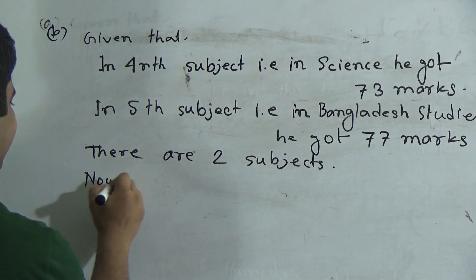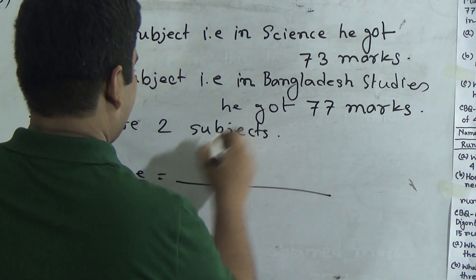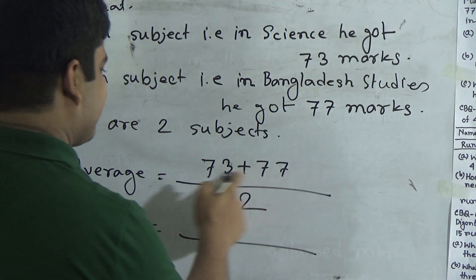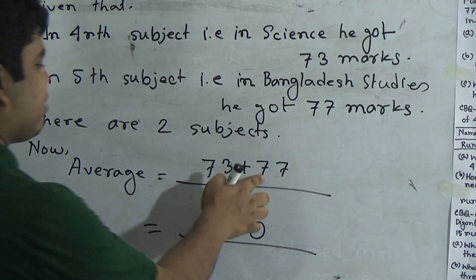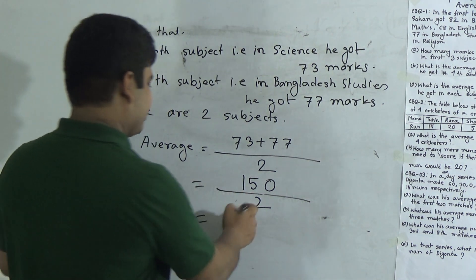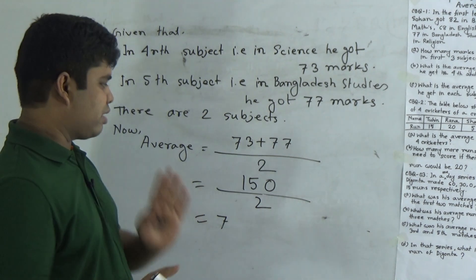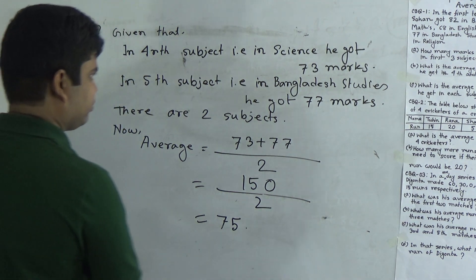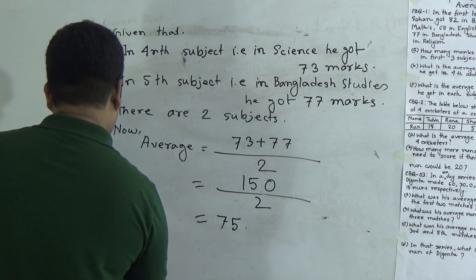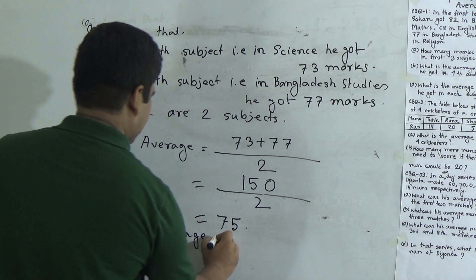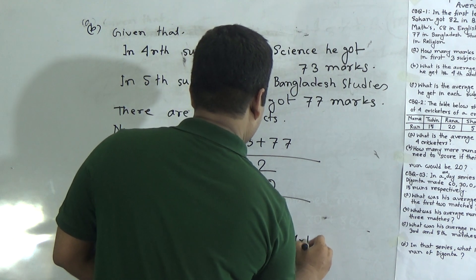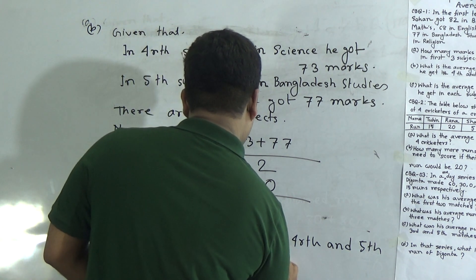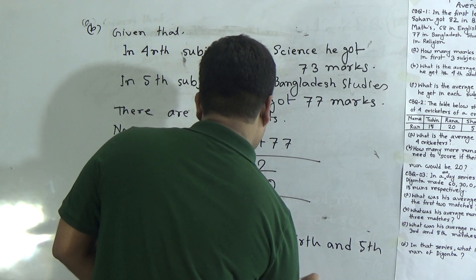Now we find out the average. Average equals 73 plus 77 divided by the number of quantities, that means 2. We do addition: 7 plus 3 is 10, write 0 carry 1; 7 plus 7 is 14, plus 1 is 15. So 150 divided by 2. 15 divided by 2 gives 7, remainder 1; bring down 0, 10 divided by 2 is 5. So 75 is the average. The average marks of the fourth and fifth subject is 75.